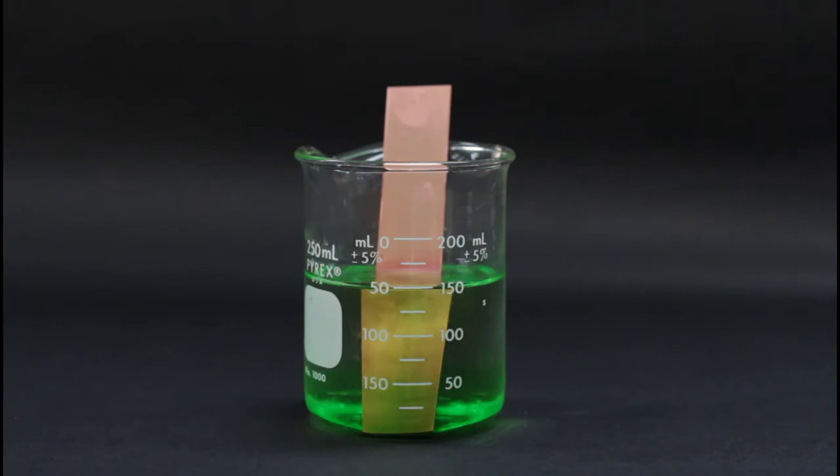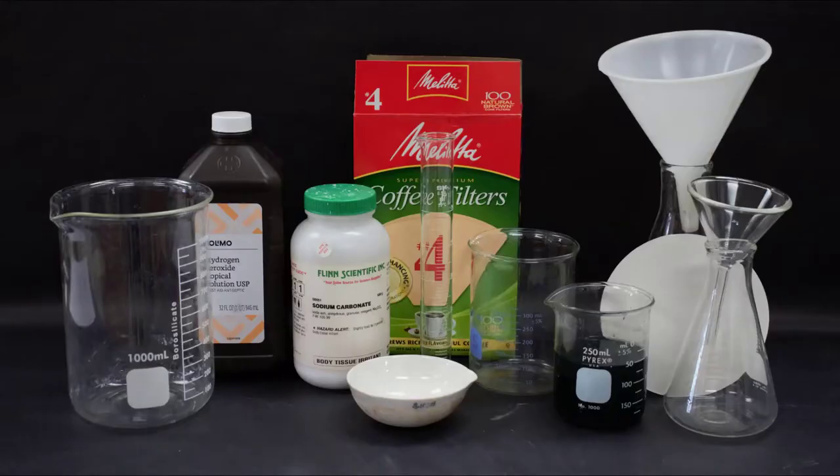The materials you'll need for day two are the solution from the day before, a 450 milliliter beaker, some sodium carbonate, distilled water. You'll need a glass funnel and a plastic funnel. You'll also need filter paper and a coffee filter. You'll need a 250 milliliter Erlenmeyer flask as well as a 500 milliliter Erlenmeyer flask. You'll need a 1000 milliliter beaker. Finally, you'll need some hydrogen peroxide, a graduated cylinder and an evaporating dish.